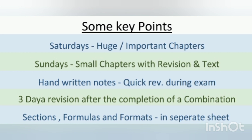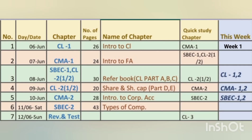Sometimes I would allocate two chapters for one day because they are small chapters. We will be covering the first combination of 66 chapters in 63 days as per the timetable, and three days for revision. Write down the sections in Company Law separately in a note or sheet, the formulas of CMA in a note or sheet, and especially the sections in SBC too — just revise and recall whenever you get free time. For CL, CMA, and SBC it would be around 9 to 10 weeks.